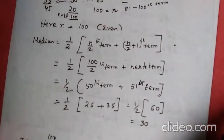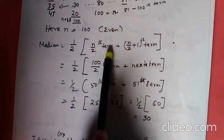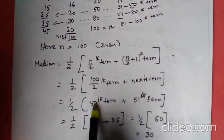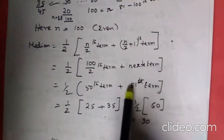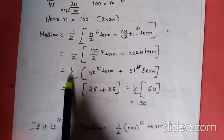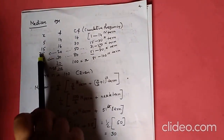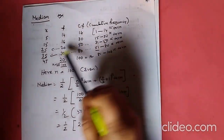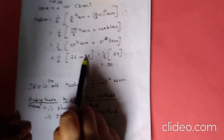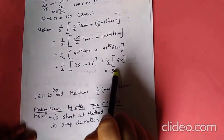Here n = 100, which is even. To find the median, the formula is the average of the (n/2)th term plus the (n/2 + 1)th term. n/2 = 50th term and next is 51st term. The 50th term is opposite 25, and the 51st term is 35. Therefore, median = (25+35)/2 = 60/2 = 30. Therefore, 30 is the median.